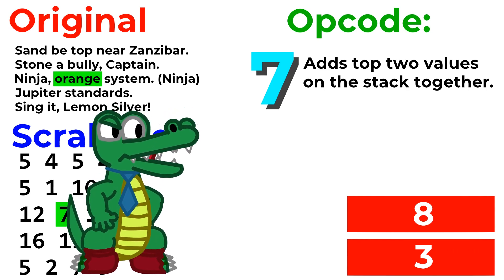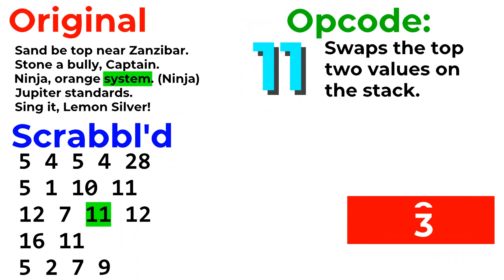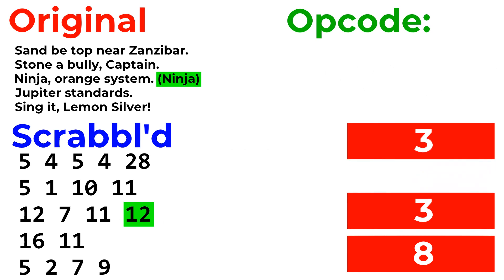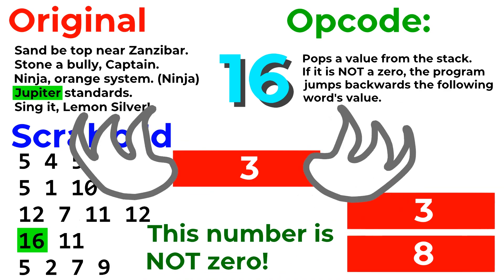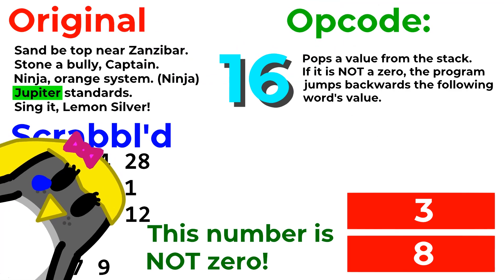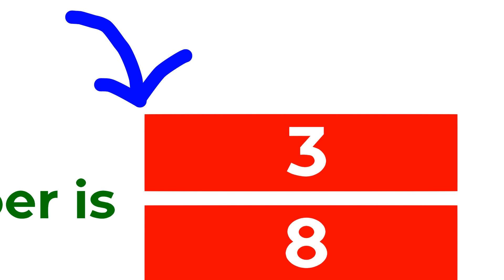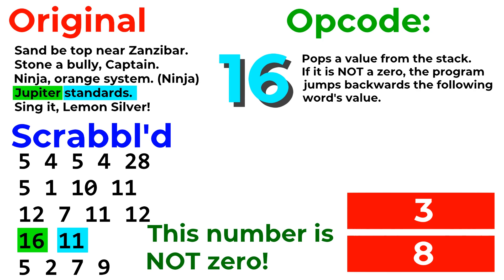Dude, all the operations in Beatnik are simple. Some might argue, too simple. After the top value on the stack is doubled, the two values on the stack are flipped again. The 3 here is acting as a counter, while the 8 will eventually become our result. The top value on the stack is duplicated again. What follows is perhaps the most complex operation in Beatnik — flow control. A word with a Scrabble score of 16 will pop the top value on the stack and check if it is a 0. That variable is then sent on to the big hard drive in the sky to be gone forever. That's why we cloned it! If the value that was sacrificed is not a 0, the next word in the code will be taken in as a parameter and converted to its Scrabble value. In this case, the word standards has the value of 11.